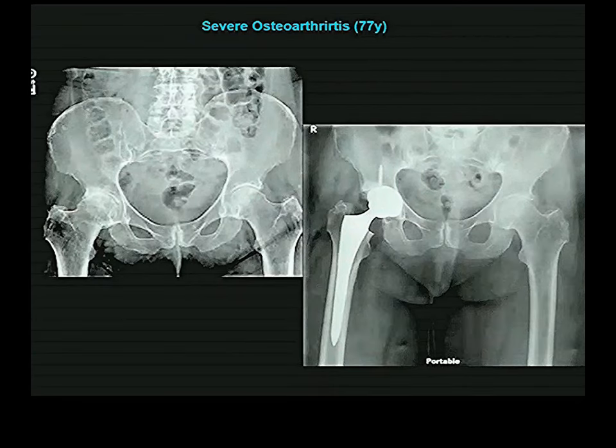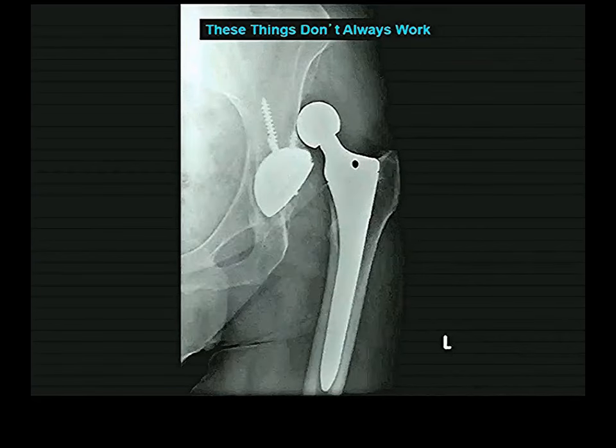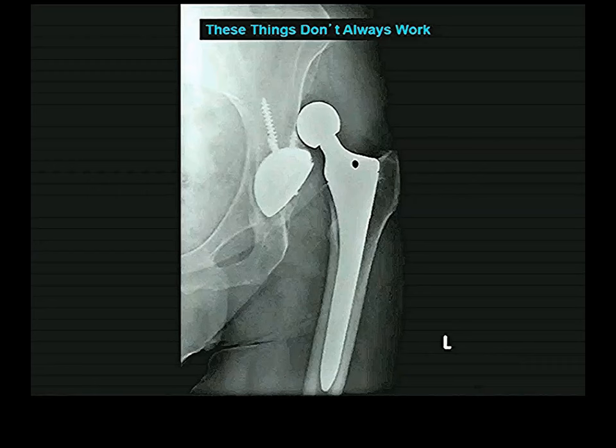Things don't always work. When you have your hip replaced, they tell you to limit activity and avoid certain motions. If you don't follow their advice, you can get a dislocation of your prosthesis.